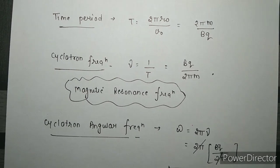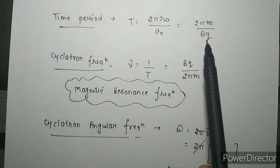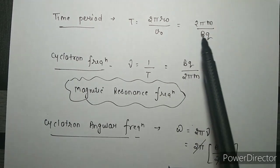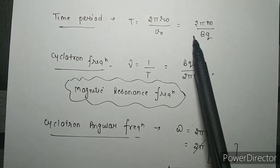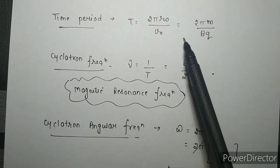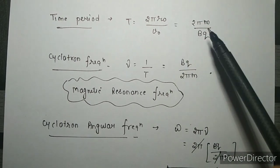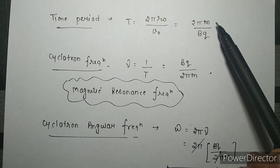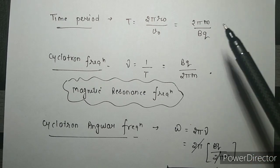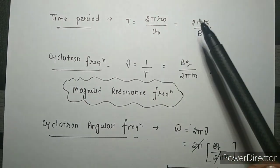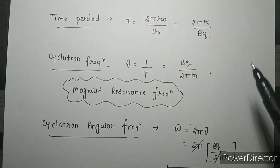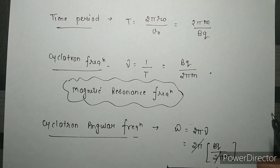An interesting fact of this complete derivation is that the time period T = 2πm / (qB) is independent of both velocity and radius. This means for every velocity and every radius, the time period is constant. The frequency and time period are constant for every revolution — this is a very interesting property of the cyclotron.